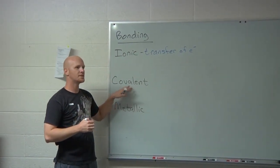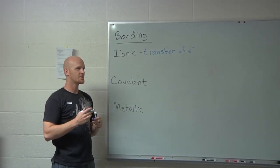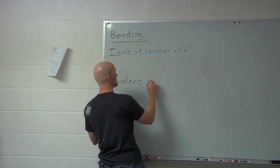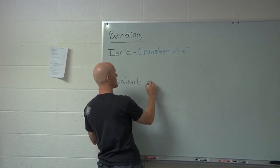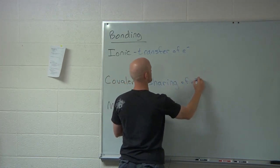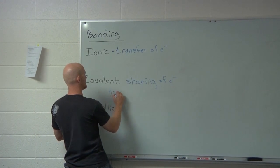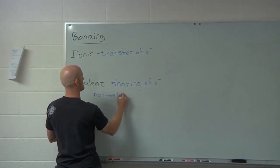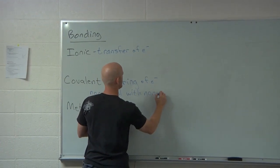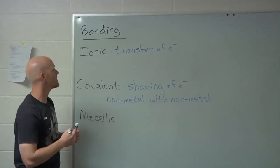On the other hand, in a covalent bond — what's going on in a covalent bond? It's not a transfer of electrons. Two non-metals. And what's going on with the electrons? Sharing. So it's a sharing of electrons. And you most notably recognize it because it's a non-metal with another non-metal. So when you see a bond between two non-metals, that's a covalent bond.